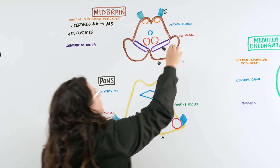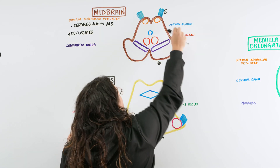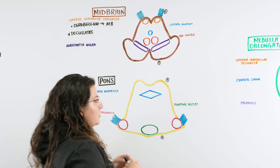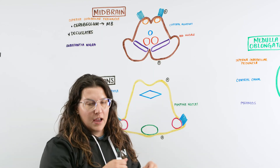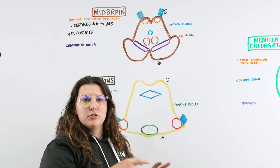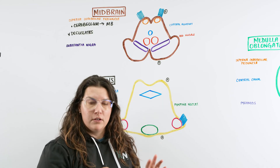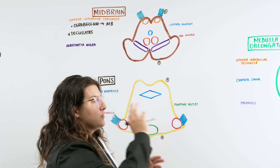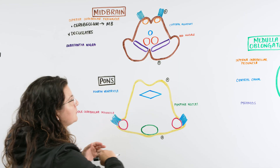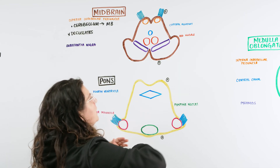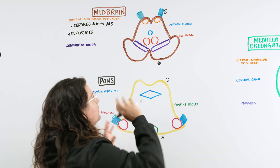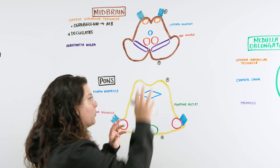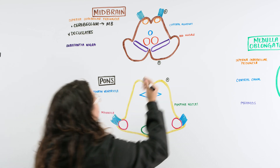Next is the cerebral aqueduct, a small canal opening in the middle of the midbrain. It connects the third ventricle and the fourth ventricle, allowing cerebrospinal fluid to flow through, providing circulation and cushioning of CSF for the safety of the brainstem and brain.